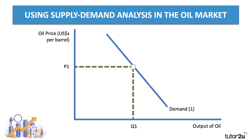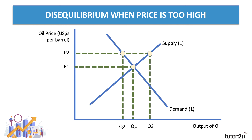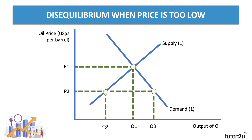The crucial thing is to be able to use supply and demand analysis in the oil market. If you're talking about oil, make sure your X and Y axes are labeled correctly — the price in US dollars per barrel on the Y axis, and the quantity on the X axis. If the price of oil is too high in the market, there'll tend to be excess supply. If the price of oil is too low at P2, there'll tend to be excess demand.